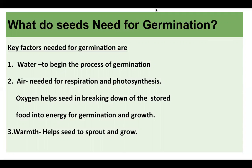The second thing a seed needs is air. Air is needed for respiration and photosynthesis. Even plants need oxygen — in human beings there is only one process, respiration, but in plants there are two: respiration and photosynthesis. For respiration, plants need oxygen; for photosynthesis, plants need carbon dioxide. Oxygen helps the seed in breaking down stored food into energy for germination and growth, just as we need oxygen so our food can be broken down to give us energy.